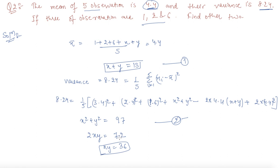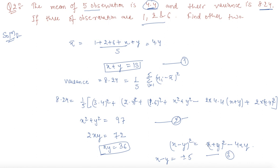Using the identity (X minus Y) squared equals (X plus Y) squared minus 4XY, we get the value of X minus Y as plus or minus 5. So now we have two equations: X plus Y equals 13 and X minus Y equals plus or minus 5. By adding these two equations, we get X equals 9 and Y equals 4, or X equals 4 and Y equals 9. So the two other observations are 4 and 9, or vice versa.